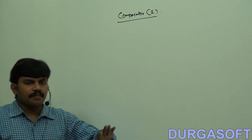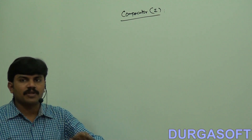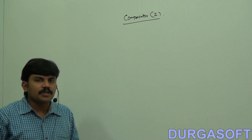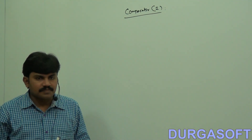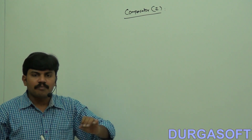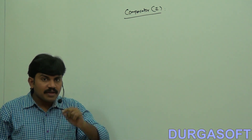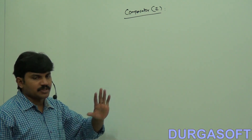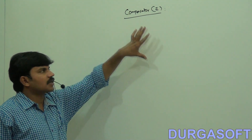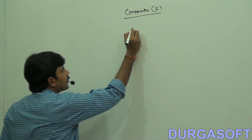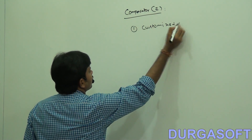is defined for customized sorting. So a very important question for the interview: what is the difference between Comparable and Comparator? Comparable is meant for default natural sorting order. Comparator is meant for customized sorting order.